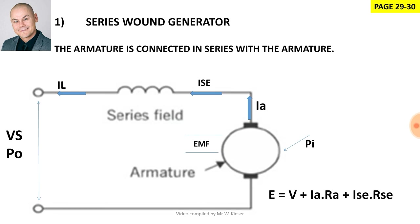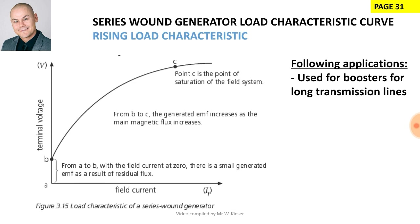Let's look at the series-wound generator. The field winding is connected in series with the armature. The generator produces armature current and supplies electrical load. Because it's a series circuit, current remains the same and voltage is divided. Looking at the generated EMF formula, there are three volt drops: the terminal voltage across the terminals, a volt drop across the armature, and a volt drop across the series winding. The load characteristic for a series generator is known as a rising load characteristic, though at some point it does reach saturation.